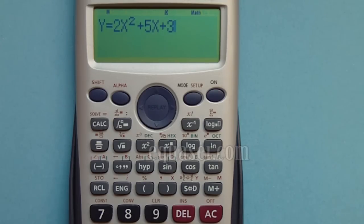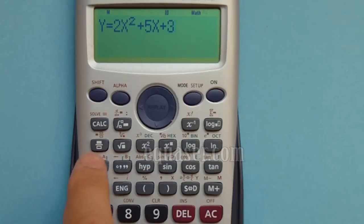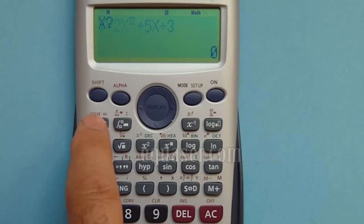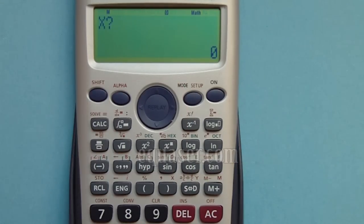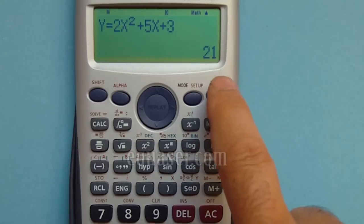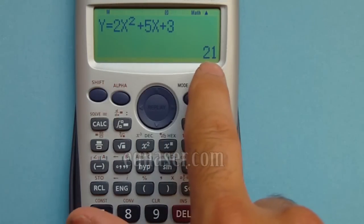As soon as I enter everything on the screen, I press CALC. Now the calculator is asking what is X. I say X is 2. I press 2 and then equal sign. It evaluated the equation, so it's 21.